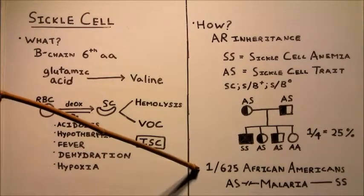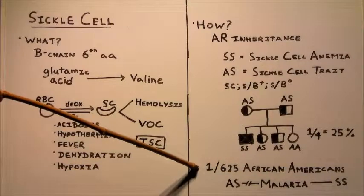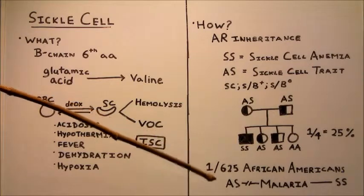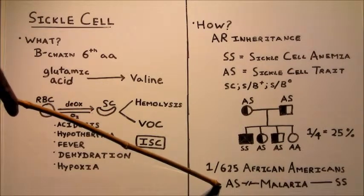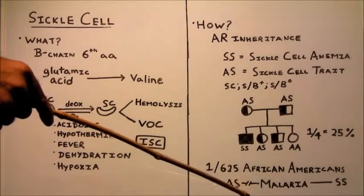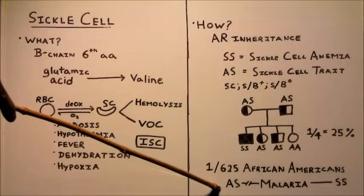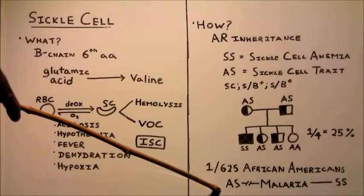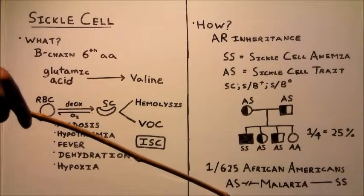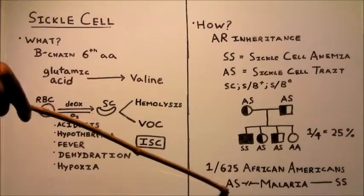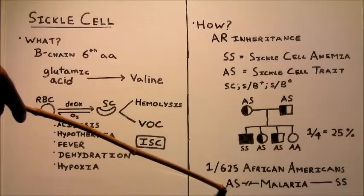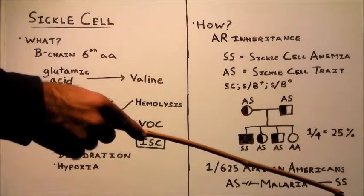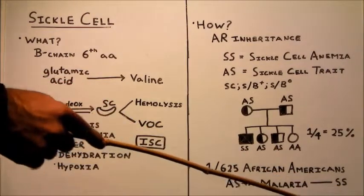Sickle cell anemia is more common in African Americans. It's found in approximately 1 in 625 African Americans. It's also been shown that sickle cell trait is protective against malaria. So one theory is that the prevalence of sickle cell anemia is higher among African Americans because they come from areas that had a high incidence of malaria. So AS was protective for them and stayed in the gene pool. However, it's important to note that if you have sickle cell anemia, you're actually more susceptible to malaria.